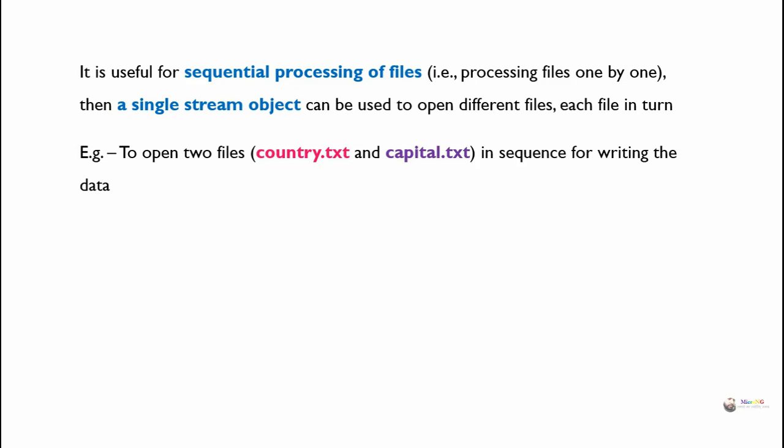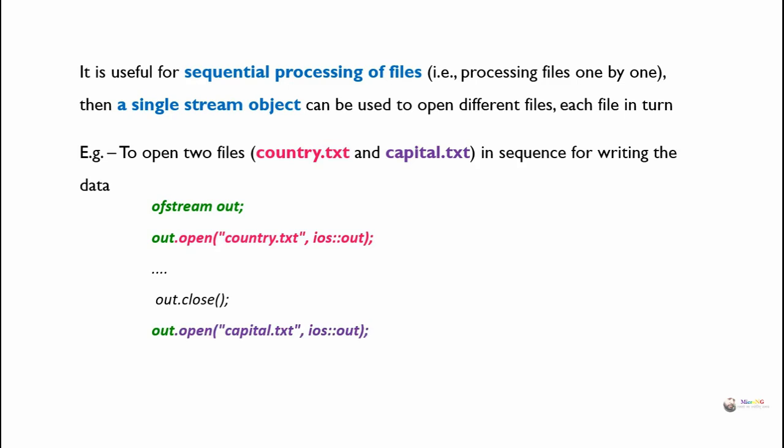For example, to open two files — country.txt and capital.txt — in sequence for writing data. First, we create an ofstream object named 'out'. Using that 'out' object, we open the first file, country.txt, in output mode. We perform the writing operations and then close the file. After closing, we open the next file, capital.txt, using the same stream object 'out' by calling out.open() with capital.txt in output mode, then perform write operations and close the file.